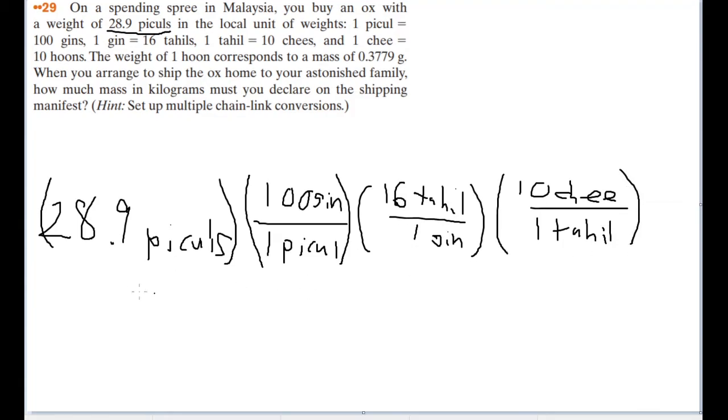I'll go into a separate line here. Then converting the shi's into huns by remembering that there are 10 huns in one shi. And finally, to get into our metric measurements, it is 0.3779 grams in one hun.